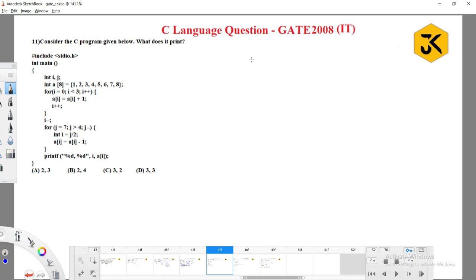Hi, let's see one of the GATE questions which was asked in the year 2008 IT paper. Here they have given few lines of code and they are asking what it will print. Every C program starts executing from the main method.